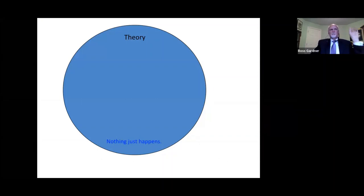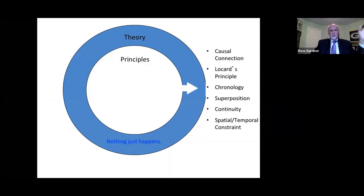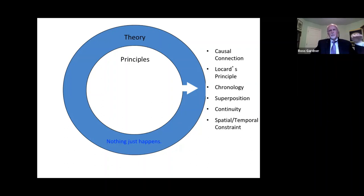To summarize our background ideas: we have a theory — in its simplest form, nothing just happens. We have five principles: causal connection, Locard's principle, chronology, superposition (just say 'layers'), continuity (is it disrupted or not?), and spatial and temporal constraint. Now what we need is a methodology to put this stuff into play.